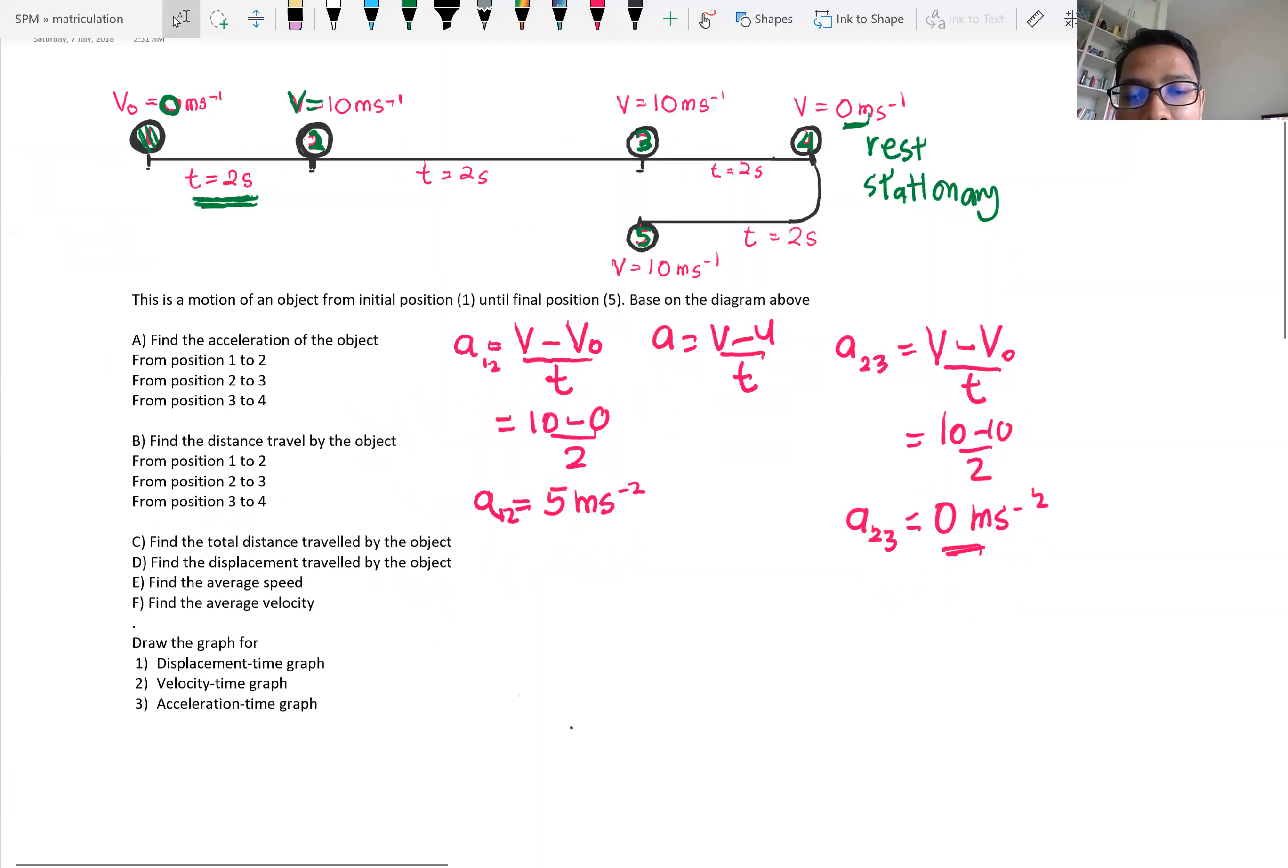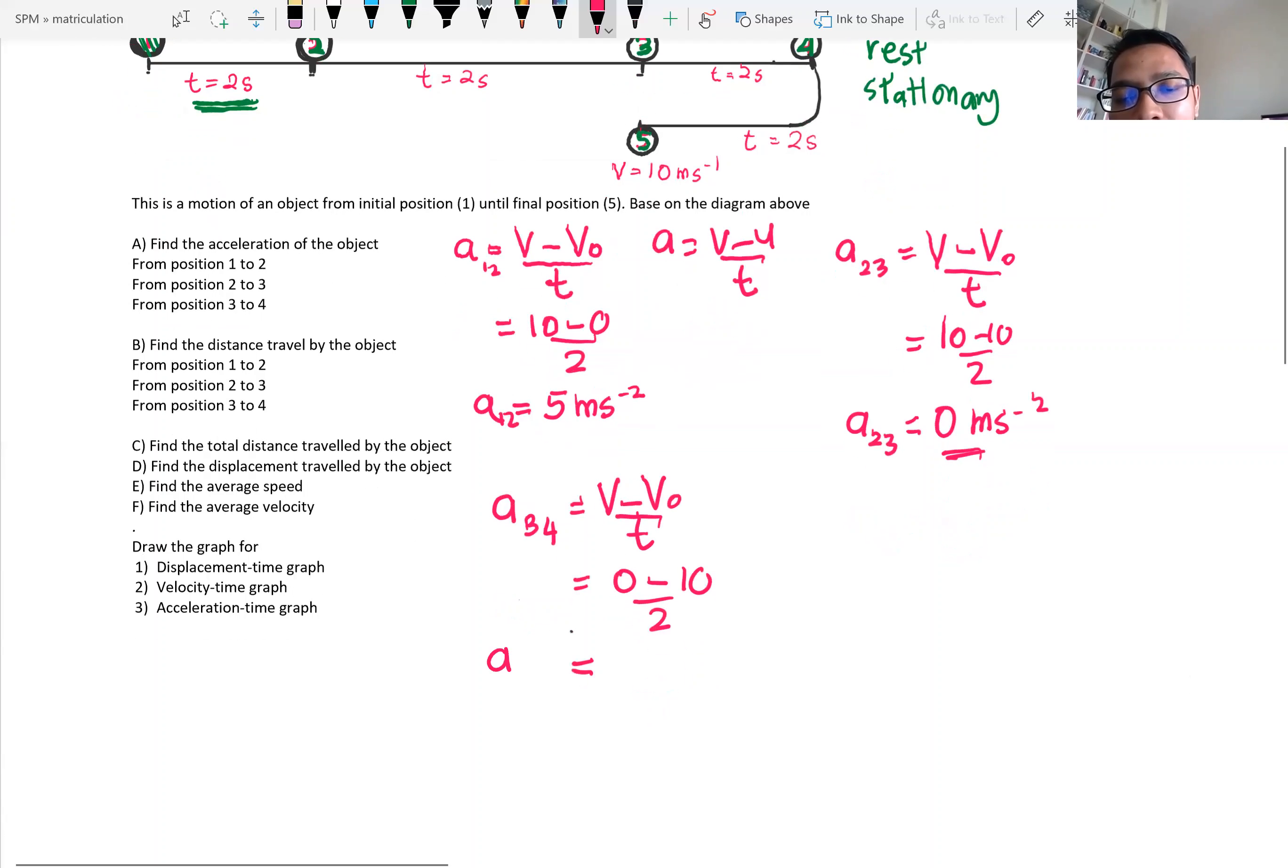Then what is the acceleration from position 3 to position 4, so the acceleration from 3 to 4, you get negative 5.